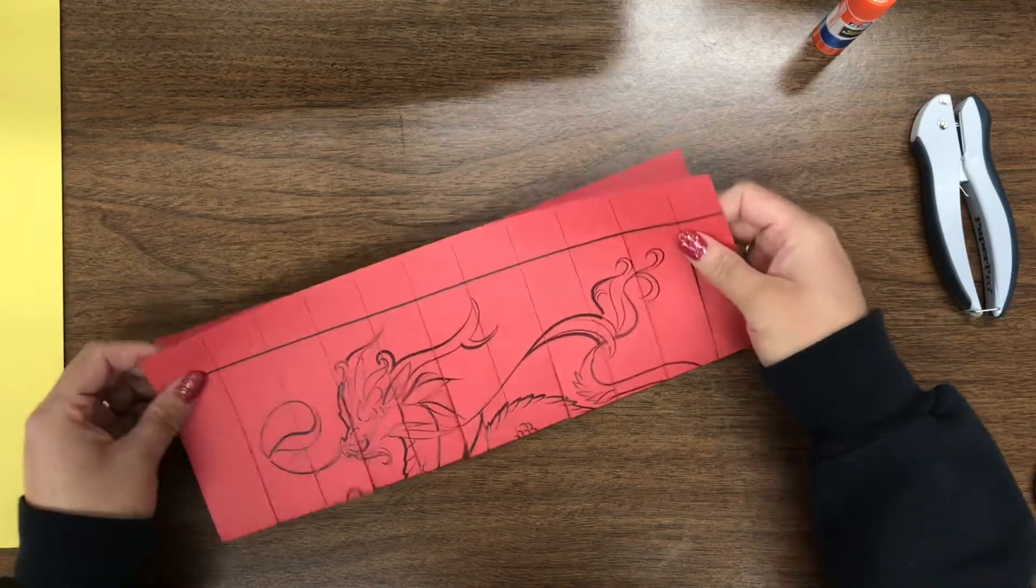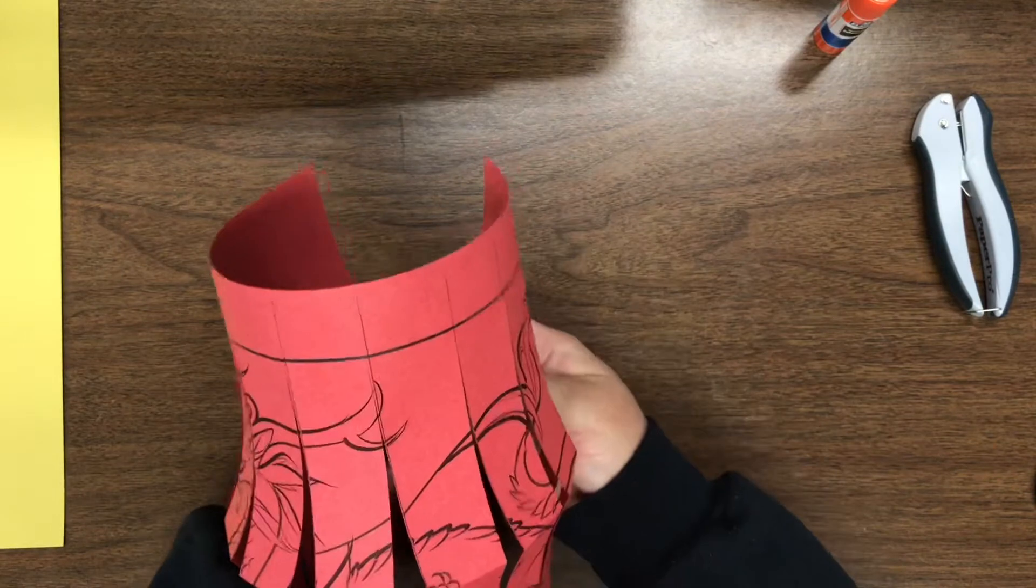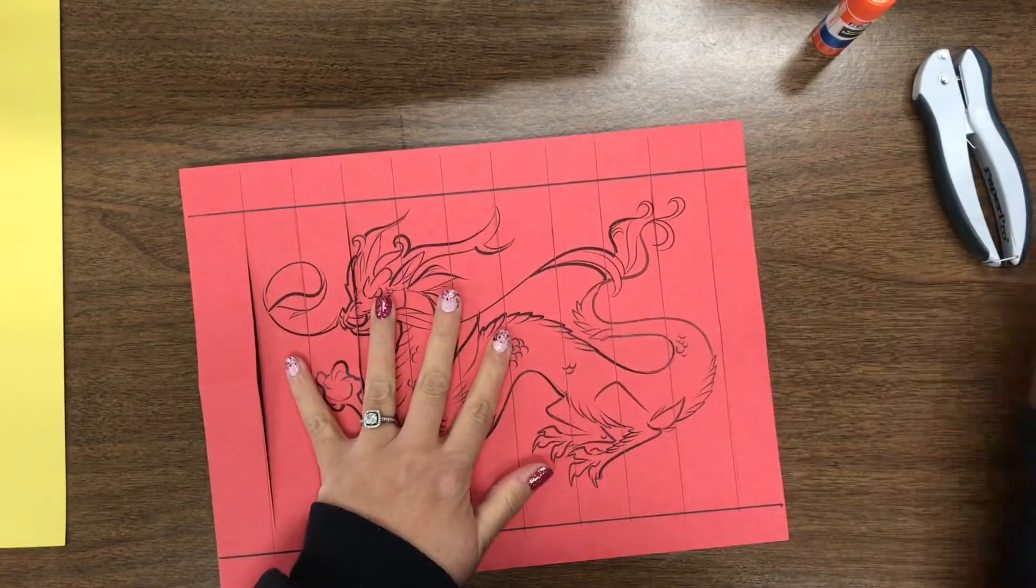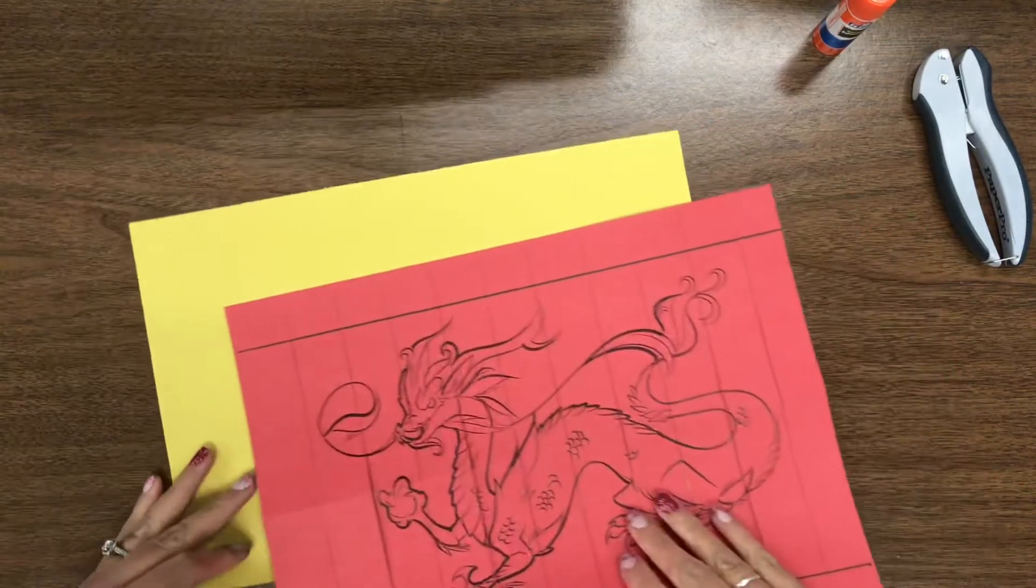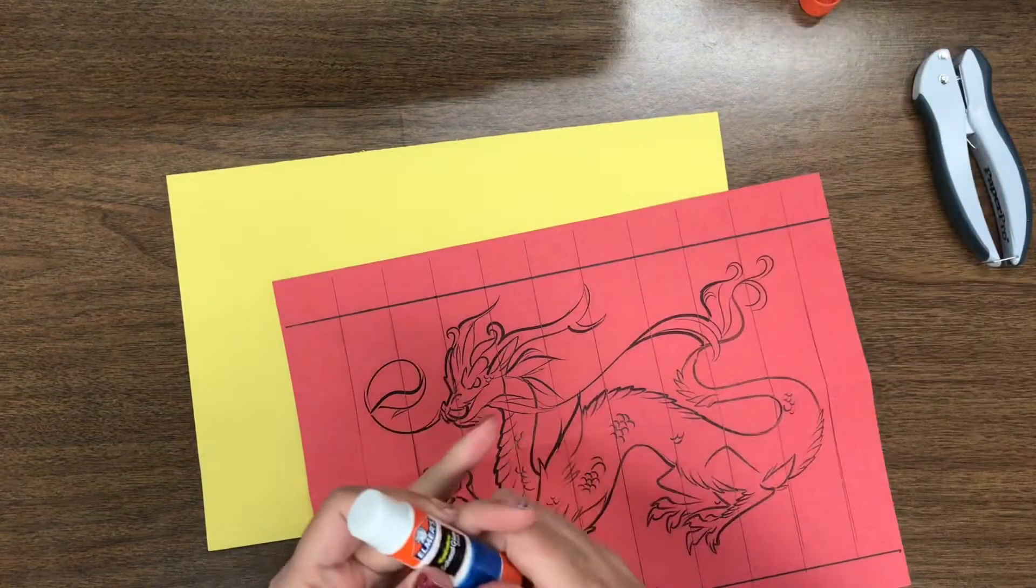And then what you're gonna do is you're gonna open it back up. Now it's got all these lines on it, right? But we're gonna be folding it like this. It's gonna look like a lantern. Now inside the lantern they usually light a candle, but we're not gonna put real fire in it right now. So we're gonna use this yellow paper and kind of make it look like it's glowing with a light inside.